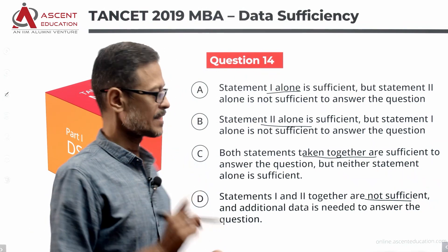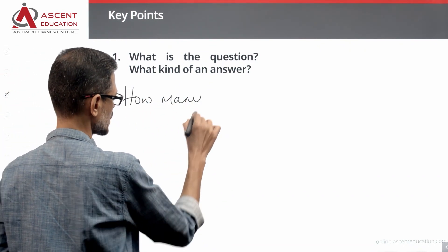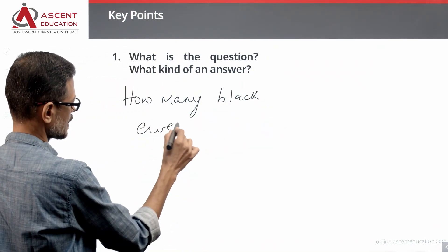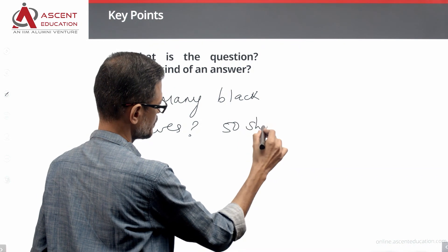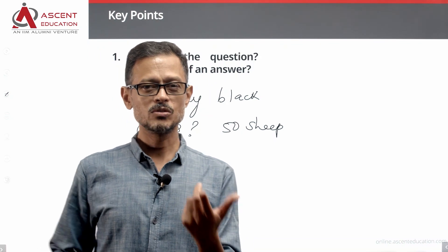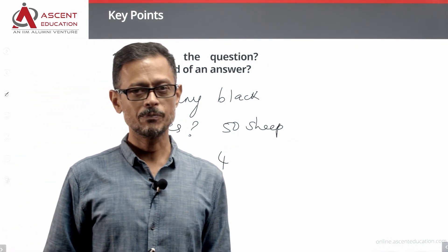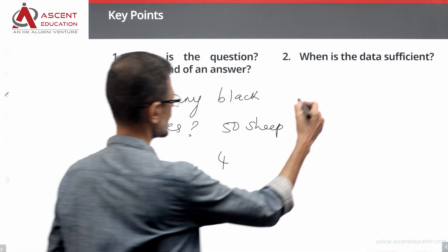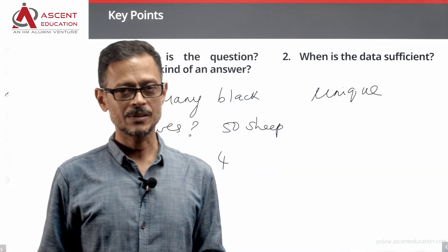Before we look at the statements, let's understand what the question is. The question is 'how many black sheep are there?' So the answer is going to be a number. The data is sufficient when we have a unique answer — when we are able to find a unique numerical answer.